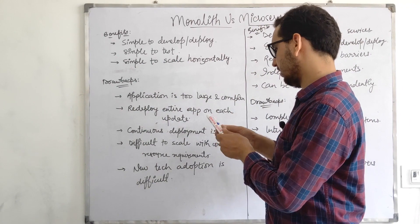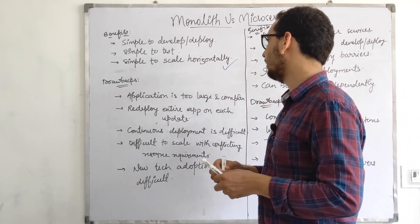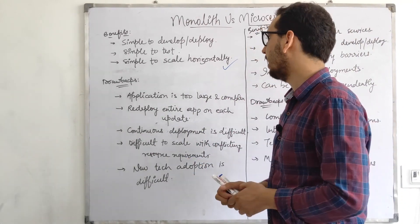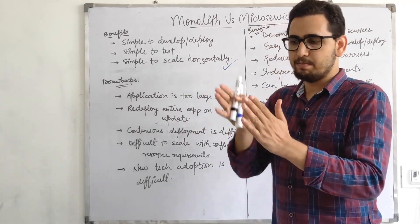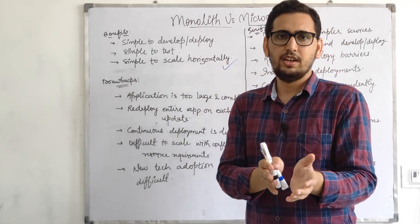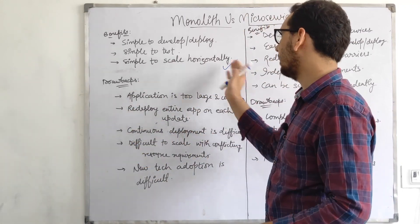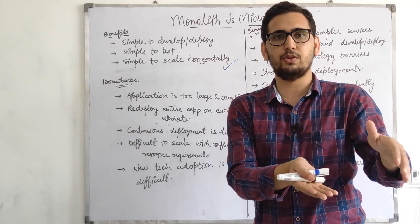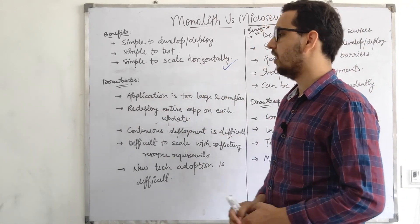It is also simple to scale horizontally. Horizontal scaling means adding parallel servers — for example, if your codebase runs on one server, you can add more machines with the same capabilities. You just take the packaged code and deploy it across five different machines instead of one.